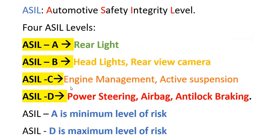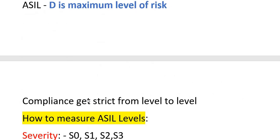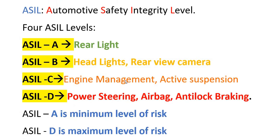Applying these three parameters, we can see that the rear light component has the minimum level of risk, belonging to ASIL A. Risk increases progressively through ASIL B, C, and D, with ASIL D representing the maximum risk level. Based on these ASIL levels, ISO 26262 compliance becomes stricter at each level, determining what tools and quality processes must be used for development and testing to meet automotive safety standards.